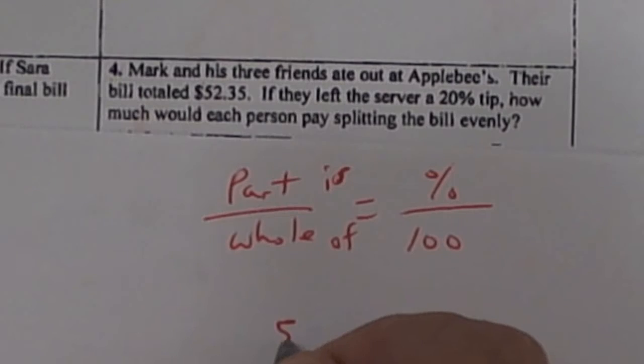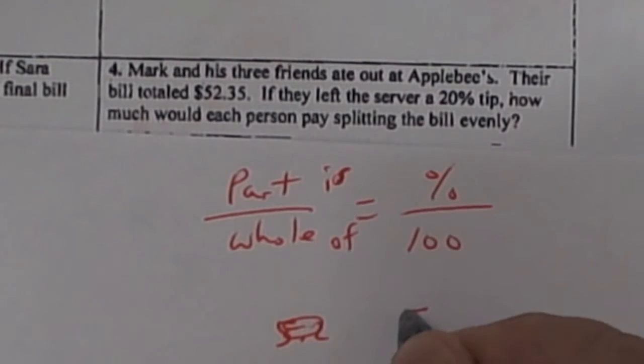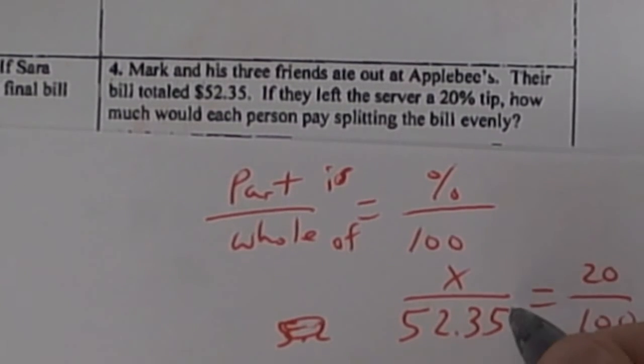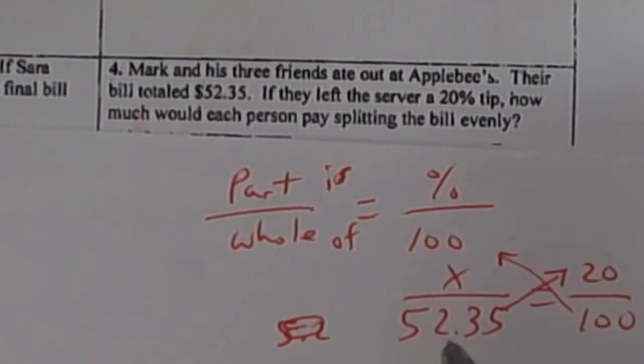So here is the total bill, so that goes at the bottom. So $52.35 goes at the bottom. We know the percent is 20% tip, so we're going to multiply that times that. You could cross multiply if you want.